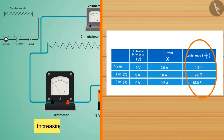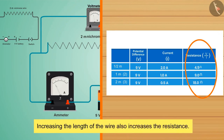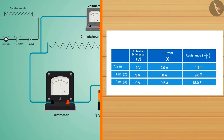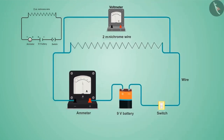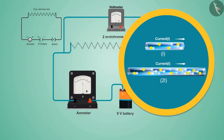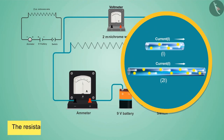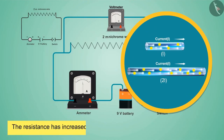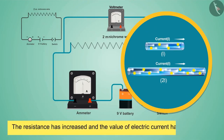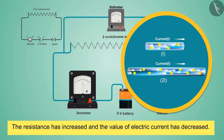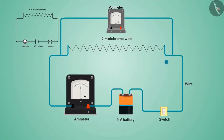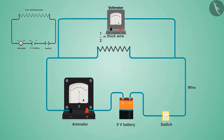Increasing the length of the wire also increases the resistance. Due to the increase in length, the electric current has to flow a larger distance, due to which more resistance is faced by it. This is the reason that the resistance has increased and the value of electric current has decreased.